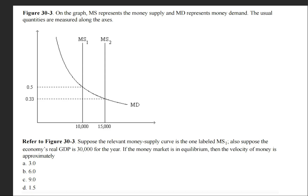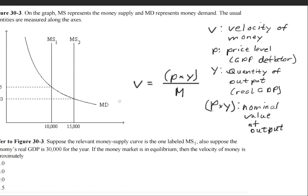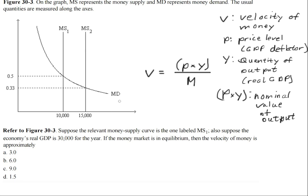This is a pretty tricky question — for some you might see right through it, but for others it can be a little deceitful. The first part is to understand the velocity equation: V is equal to P times Y divided by M, where V is the velocity of money, P is the price level or the GDP deflator, Y is the quantity of output or the real GDP, and P times Y is the nominal value of output.